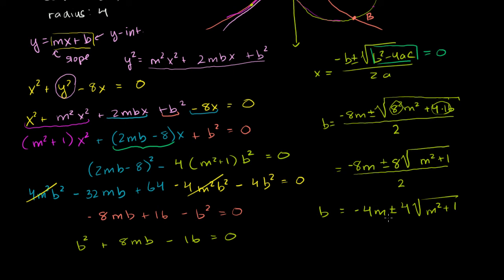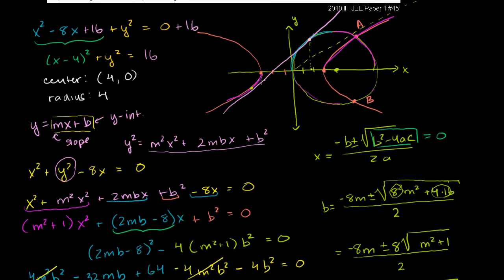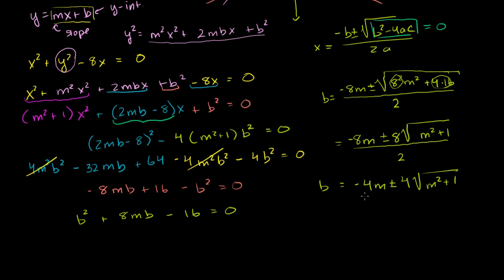Now let's think about which solution we want. We want a positive slope and a positive y-intercept based on the way the line is drawn. Since m is positive, the negative 4m term is negative, so our only chance of getting a positive b is to take the plus case. And it will indeed be positive, because m squared plus 1 is greater than m squared, so 4 times the square root of m squared plus 1 is greater than 4m. So we want b equals negative 4m plus 4 times the square root of m squared plus 1.